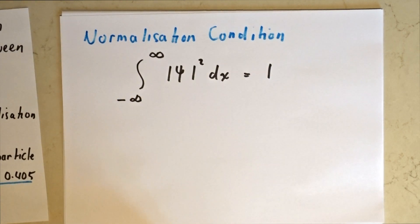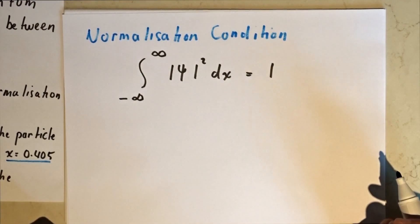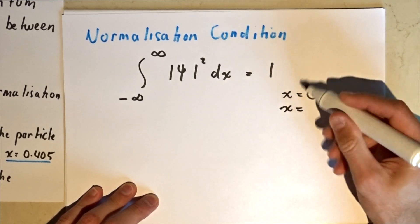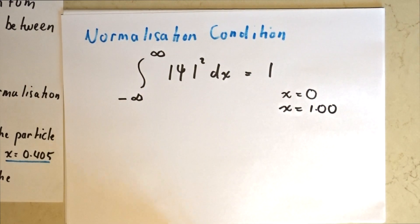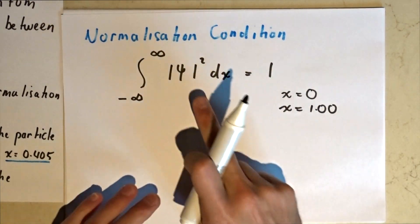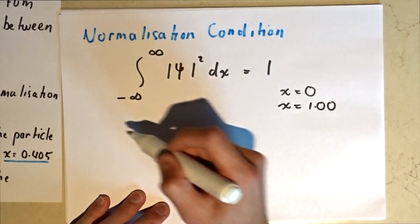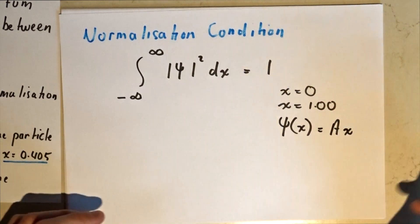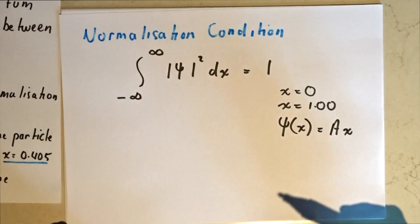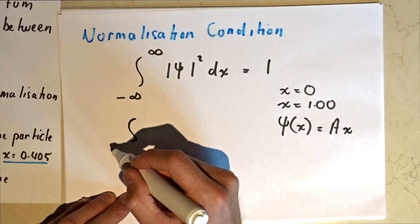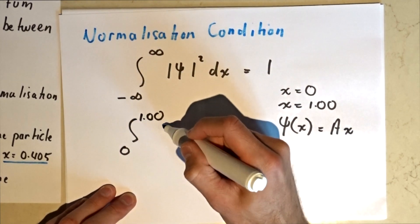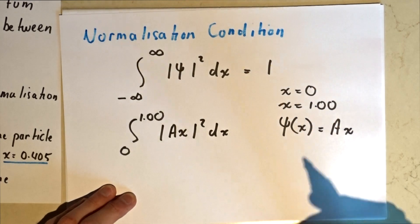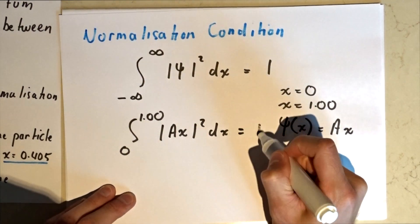Now from here, what we have to do is integrate. We're going between the values x equals zero and x equals one. Now let's plug in the actual wave equation function. Plugging all these values into our normalization condition equation, between the values of zero and one, the absolute value of our wave equation squared equals one.